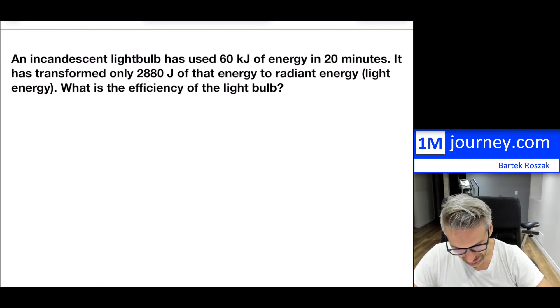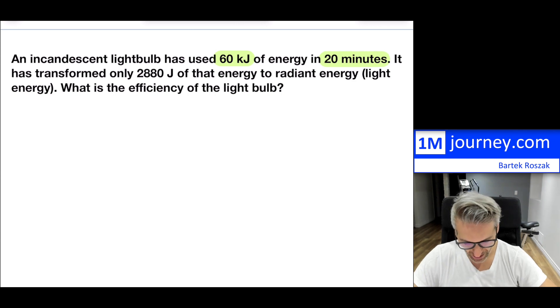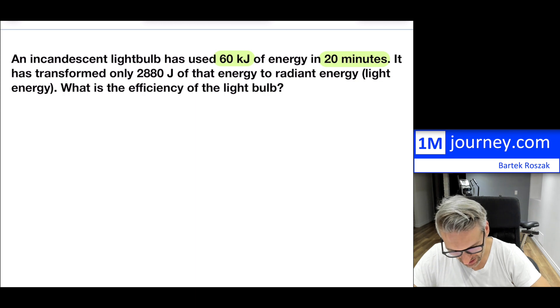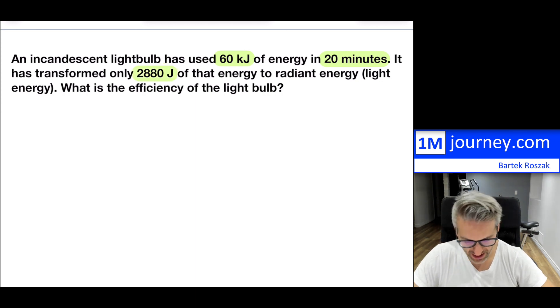And now it's great because it's capable of producing radiant energy or light energy, but a lot of it, and you may notice this, I don't recommend you touching a light bulb, especially if it's an incandescent light bulb, because a lot of it is going to get into and transfer into thermal energy. And typically we might think of that as increasing the temperature of that light bulb. So in any case, let's take a look and see what happens. So we have an incandescent light bulb, and it has used 60 kilojoules of energy in 20 minutes.